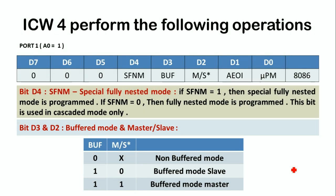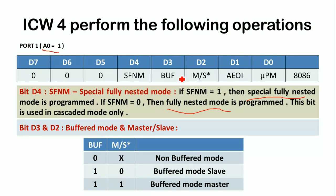The next command word is ICW4. If bit D4 equals 1, the 8259 PIC will be in special fully nested mode. If D4 equals 0, the 8259 PIC will be in normal nested mode. This bit is used only in cascaded mode, and the A0 line equals 1 for ICW4. Bits D2 and D3 decide the buffered mode for master and slave: if D3 equals 0, the 8259 PIC is in non-buffered mode. If D3 equals 1 and D2 equals 0, it is buffered mode for slave.